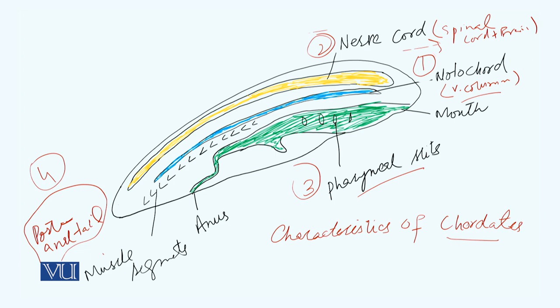The second is the nerve chord. The nerve chord exists above the notochord. The third one is the pharyngeal slits and post-anal tail.